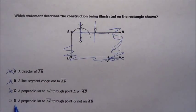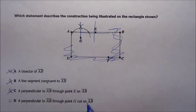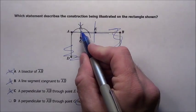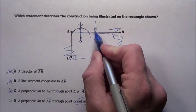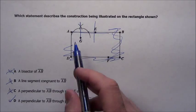So it's going to be choice D, a perpendicular to line segment AB through the point G which is not on AB. All that means is hey, G wasn't a point on there like E was. And that's exactly what we've done there. So it's choice D. We've drawn a perpendicular.